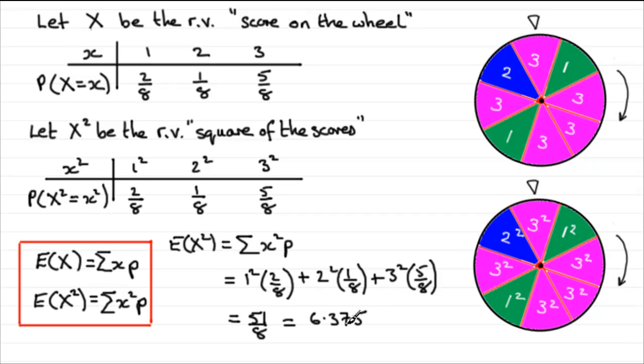So what we would expect then is that if we were to spin this spinner lots of times, we would expect to have a mean score when it comes to the square of the scores to be 6.375. So hopefully you've got some idea of the meaning behind E(X²).